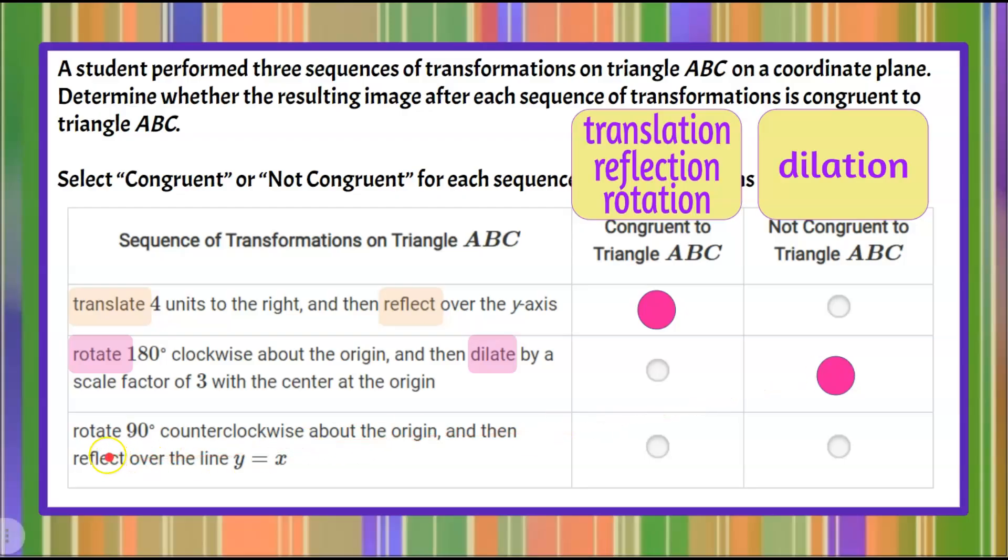And our third is rotate, followed by reflect, and both rotate and reflect result congruent images. Therefore, after both of these, we will have a congruent triangle.